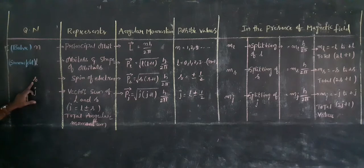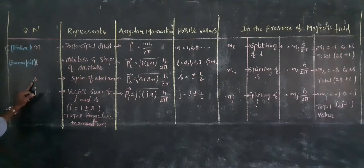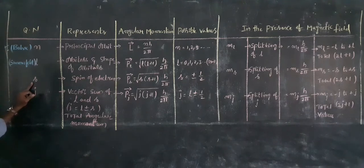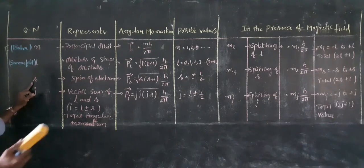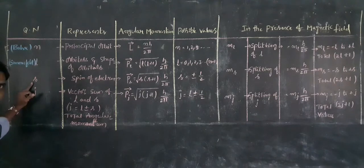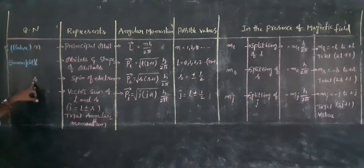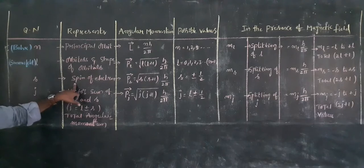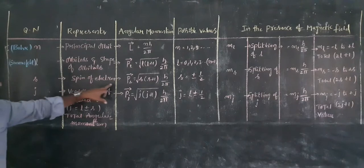Next is spin. The electron has a spin. The electron indicates the spin. The spin quantum number is associated with the spin angular momentum of the electron.